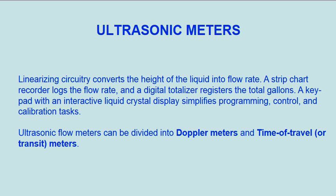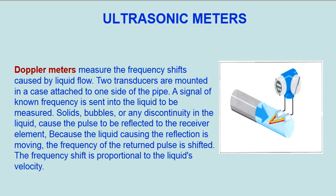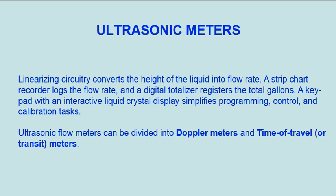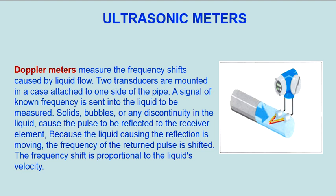Ultrasonic flow meters can be divided into Doppler meters and time of travel, or transit, meters. Doppler meters measure the frequency shifts caused by liquid flow. Two transducers are mounted in a case attached to one side of the pipe.